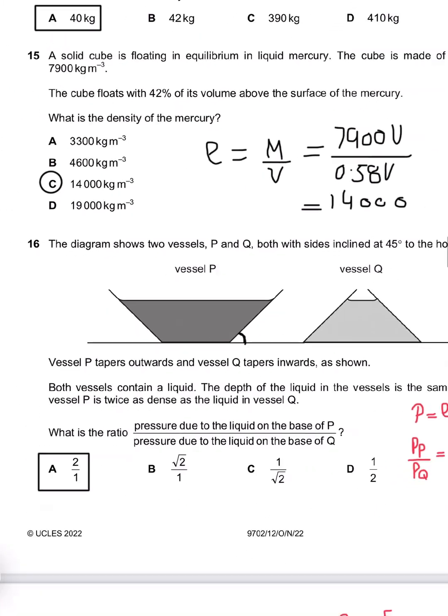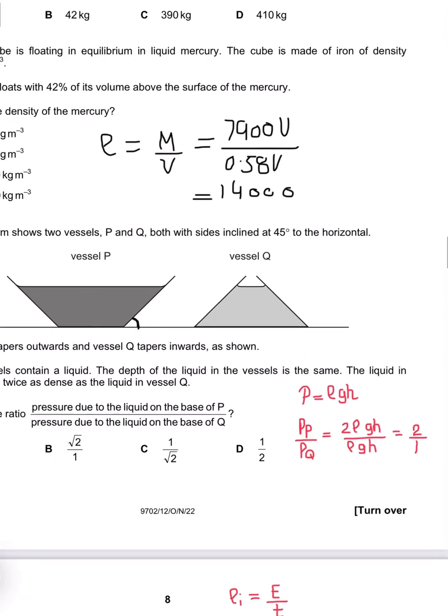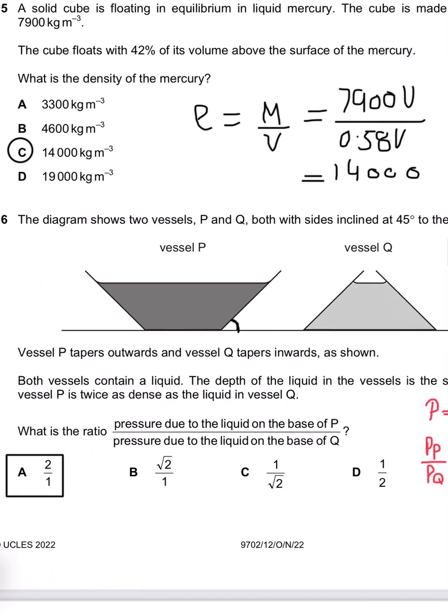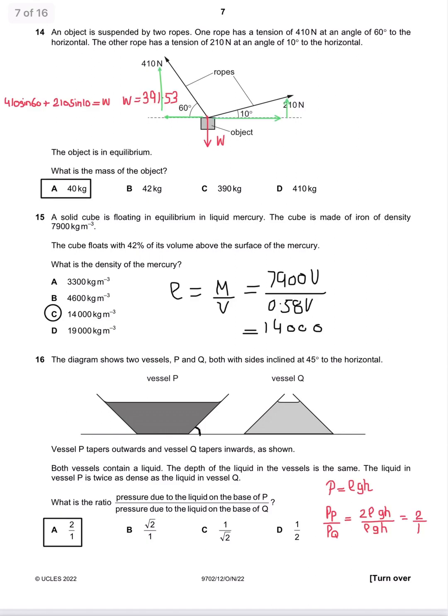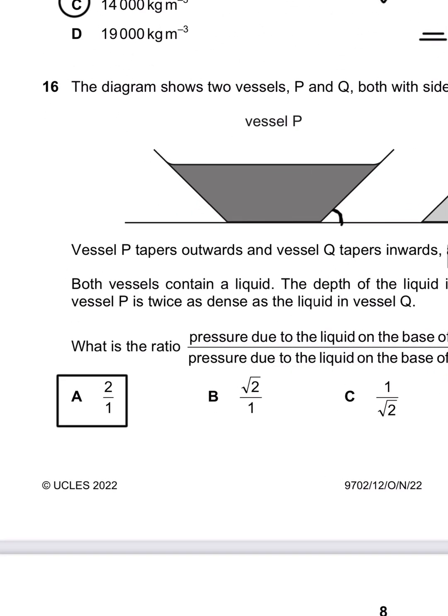Question 16: What is the ratio of the liquid on the base of P and the pressure due to liquid on the base of Q? The liquid in vessel P is twice. We can see that pressure equals ρgh, so 2ρgh over ρgh, 2 over 1. So A is the appropriate answer.